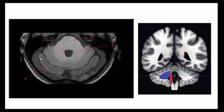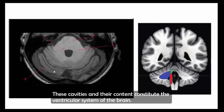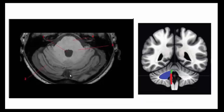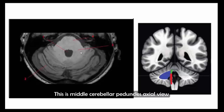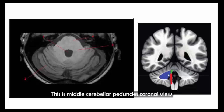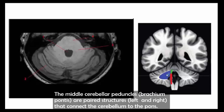This is the cerebellar hemisphere. The cerebellar hemispheres are two divisions of the cerebellum on either side of the vermis. This is the middle cerebellar peduncle on axial view and coronal view. The middle cerebellar peduncles are paired structures that connect the cerebellum to the pons.